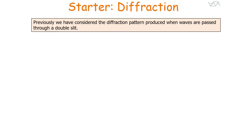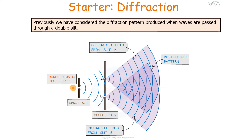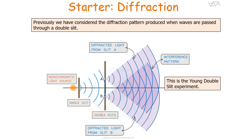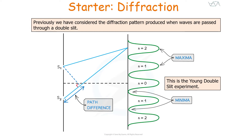Previously we've considered the diffraction pattern produced when waves are passed through a double slit, and you can see the interference pattern produced. This is the Young's double slit experiment where we pass a wave through two slits, so they interfere with each other producing an interference pattern. You get areas of maxima and minima when you carry out this particular diffraction experiment.